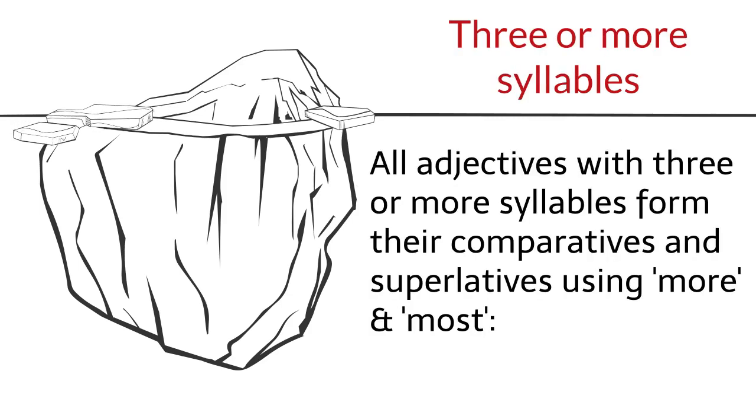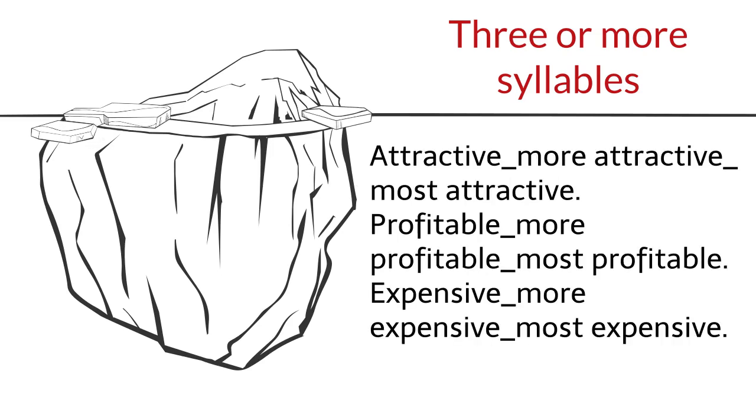Three or more syllables. All adjectives with three or more syllables form their comparatives and superlatives using more and most. Attractive, more attractive, most attractive. Profitable, more profitable, most profitable. Expensive, more expensive, most expensive.